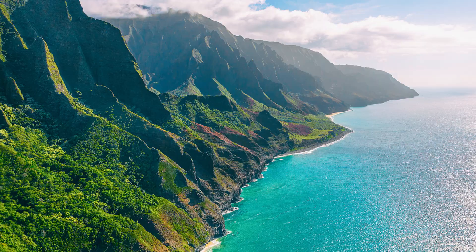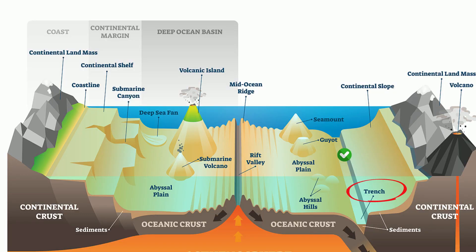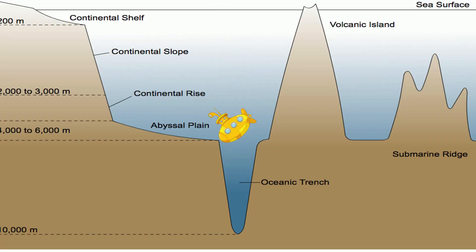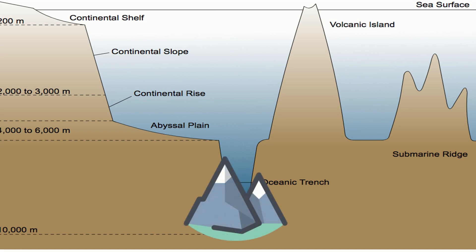There are also trenches located at the ocean floor. An ocean trench is a V-shaped valley that is long and narrow, and they are the deepest parts on earth. They may extend 5 or 6 miles below sea level. Mount Everest would fit inside the largest trench and would still be over a mile below the surface of the earth.